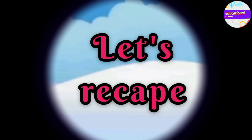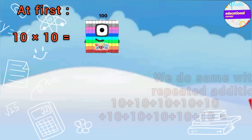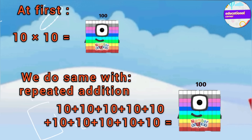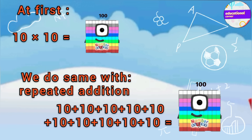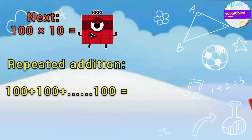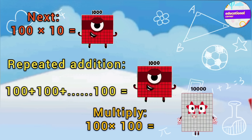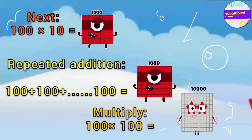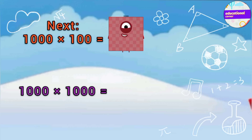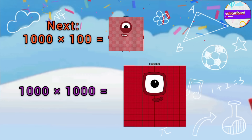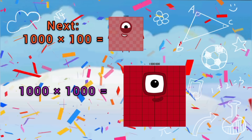Let's do a recap. Multiplication is the fastest way to get something, and repeated addition shows you how it works. First we do 10 by 10 to get 100. Then we multiply 100 by 10 — the answer is 1000, and we understand it by repeated addition. Then we do 100 multiplied by 100, so the answer is 10,000. Next we do 1000 by 100 — the answer is 100,000. Then 1000 by 1000 equals 1,000,000.